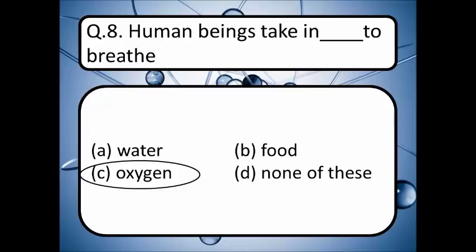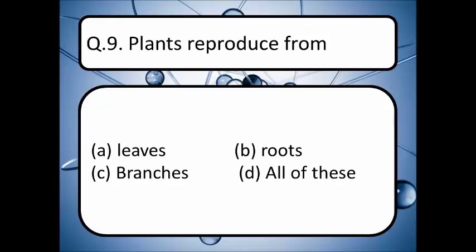Plants reproduce from — option A, B, C, or D. Pick your correct answer and write it down in the comment box. The correct answer is D — all of these.